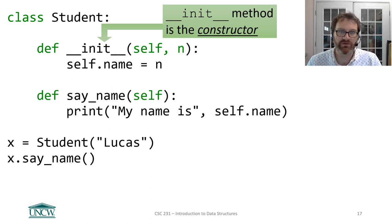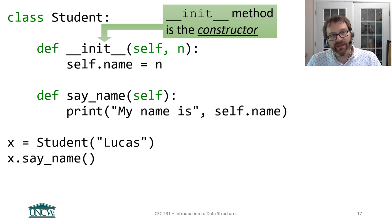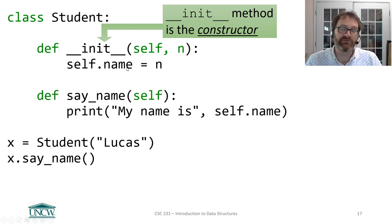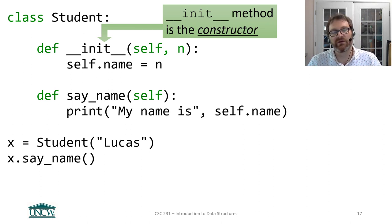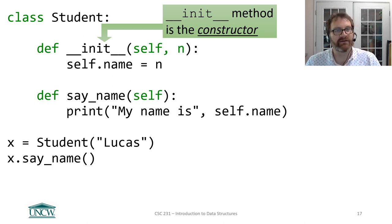This method is a very special method called the constructor. There are constructor methods in other programming languages as well. The job of the constructor is: when you want to make a new student instance, this is the method that gets called implicitly by Python. If you do not define the constructor method, Python just gives you a blank student. Now what we want is to initialize some data in that student, so we define the constructor and give it the data we want inside.